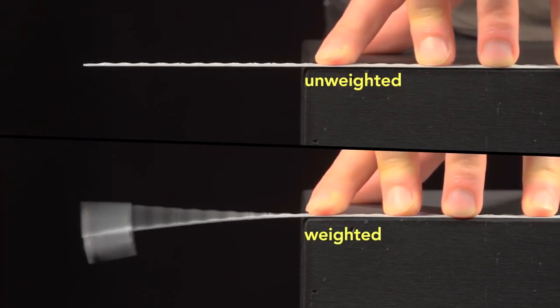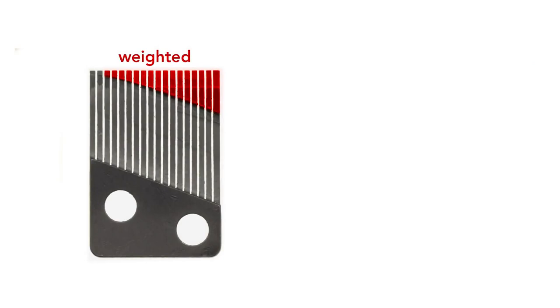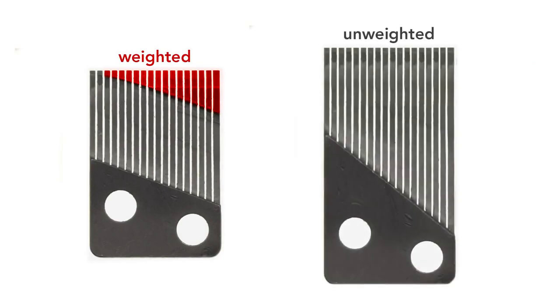Because of this weighting, the comb is more compact. For this particular design, if the comb were unweighted, it would have to be roughly 40% longer to produce the same range of frequencies.